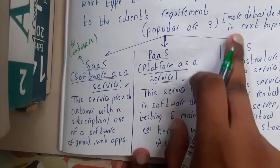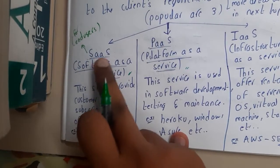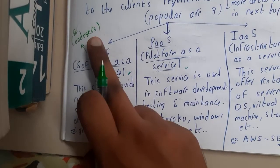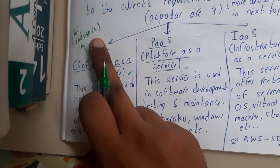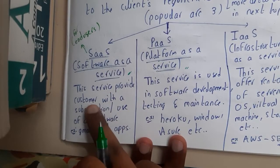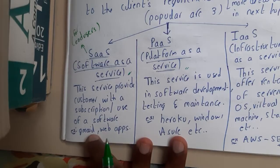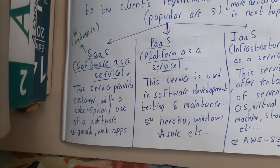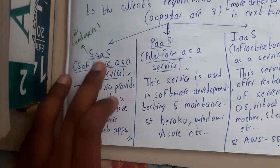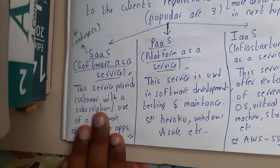The shortcut is SaaS — Software as a Service. This is mainly for front end users. The service provider provides a customer with a subscription or use of a software. It might be Gmail, web apps, Google Drive, OneDrive — all those things come under SaaS.